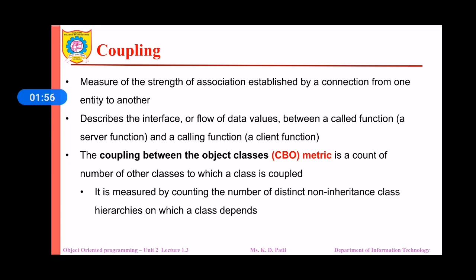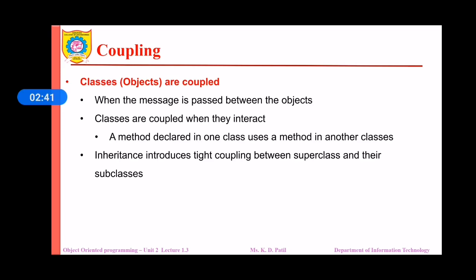Now let us consider one example. I have three classes: class A, class B, and class C. Class C is the subclass of class A, and class C is inheriting the properties and variables from class A. Now class B is coupled with class A. Since class C is also coupled with class A, class B will automatically also be coupled with class C. But the CBO metric of class B will be considered as one, because there is an inheritance relationship between class A and class C.